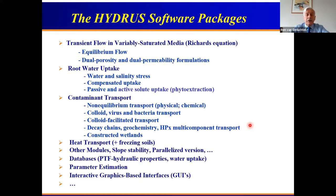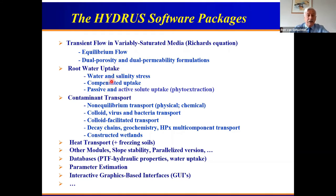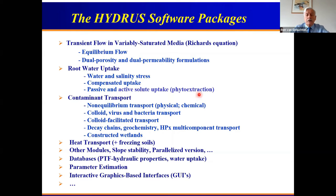More generally, the focus was on our HYDRUS codes that we've developed and worked with for about 30 to 40 years. These address the Richards equation for transient flow in variably saturated media, root water uptake — critical in agriculture but also in many environmental applications including evapotranspiration and global climate — with compensated uptake, passive and active solute uptake important for phyto-remediation problems. And then contaminant transport — agriculture has always been the biggest polluter — so we try to really understand and minimize the effects of various processes.